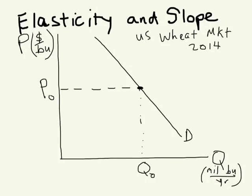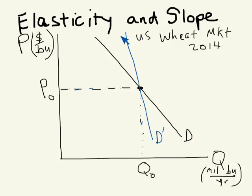If we had a demand curve that looked like this instead — a really steep demand curve — and we're talking about demand at this price-quantity pair P0, Q0, we can say we know that the price elasticity of the steeper blue demand curve at P0 and Q0 is smaller in absolute value than the price elasticity of demand of this black demand curve D. The price elasticity of demand in absolute value is lower for this blue line than it is for this black line.